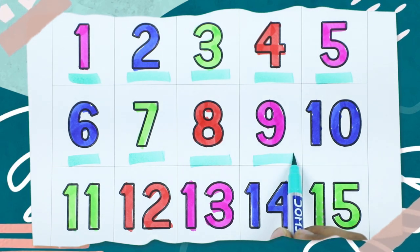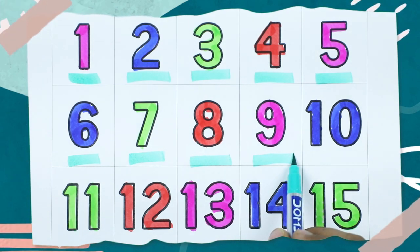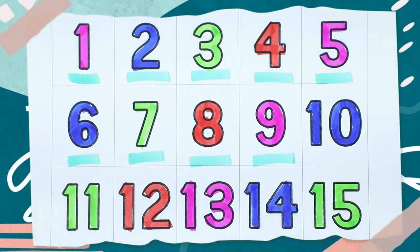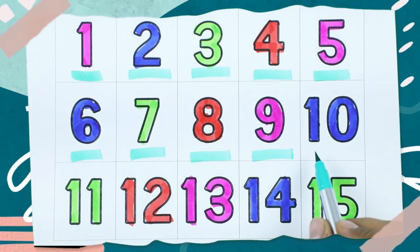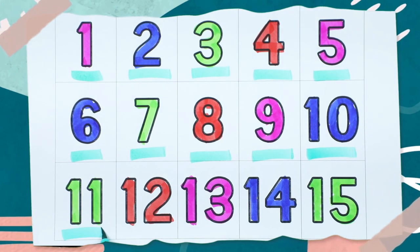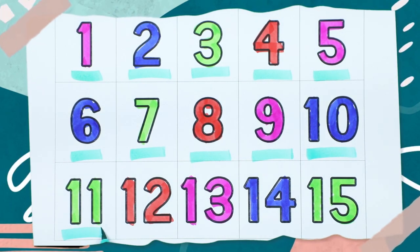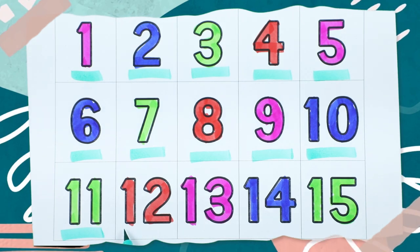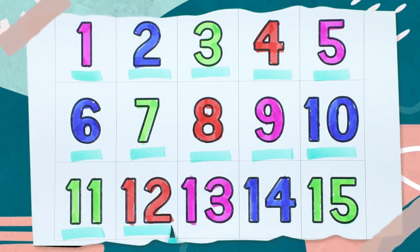Number nine, right. One zero, ten, it's blue color. One one, eleven, which color is this? Green. One two, twelve, it's red color.